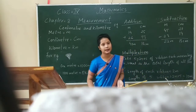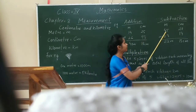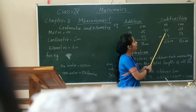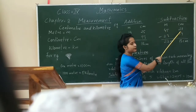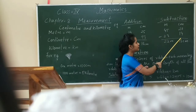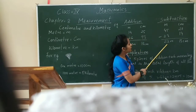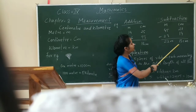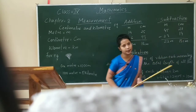Here is the example of subtraction: 45 meters 27 centimeters minus 23 meters 14 centimeters. The difference is 22 meters 30 centimeters.